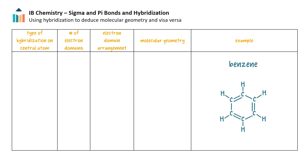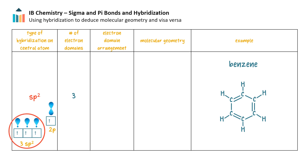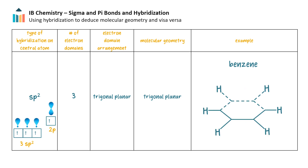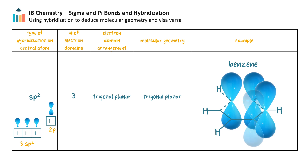Here is a last example: benzene. Each carbon atom has three electron domains, and so each carbon atom must be sp2 hybridized. This results in a trigonal planar shape around each carbon atom, and the net effect is an overall planar molecular shape. Each carbon atom also has an unhybridized p orbital with one electron. We can turn the ring on its side to see how these p orbitals are positioned perpendicular to the plane of the molecule.